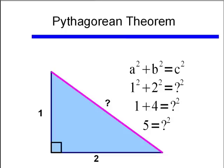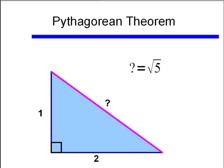Now if I use the square root property to solve this, I take the square root of both sides, and I would come up with the length of the hypotenuse being square root of 5.